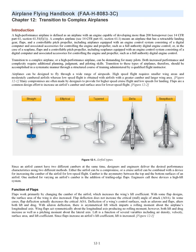Chapter 12: Transition to Complex Airplanes. Introduction. A high-performance airplane is defined as an airplane with an engine capable of developing more than 200 horsepower, per 14 CFR Part 61, Section 61.31(f). A complex airplane, per 14 CFR Part 61, Section 61.1, means an airplane that has a retractable landing gear, flaps, and a controllable pitch propeller, including airplanes equipped with an engine control system consisting of a digital computer and associated accessories for controlling the engine and propeller, such as a full-authority digital engine control.